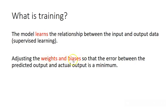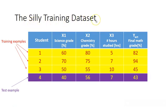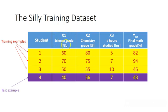Here is our silly training dataset. This data set is made up of data from a university course or high school, where you've got three training examples. This column is the science grade, this is your chemistry grade, and this is the number of hours studied. It's all made up data, which is why I call it a silly training dataset — it's also silly because it's only got three training examples, whereas in real life you'll have hundreds or thousands.